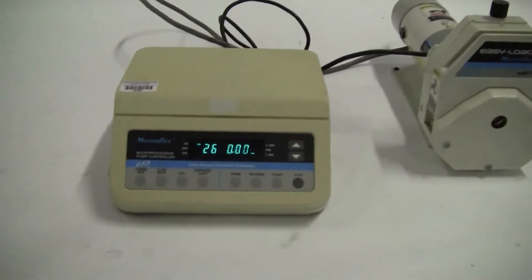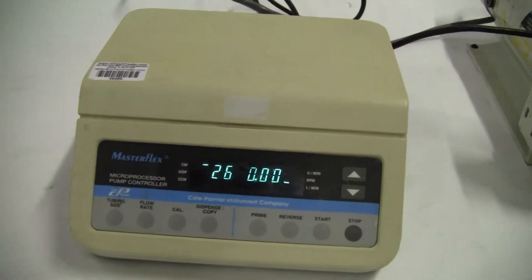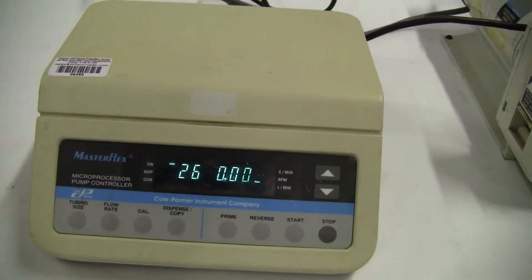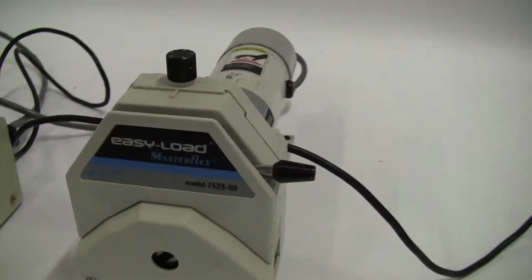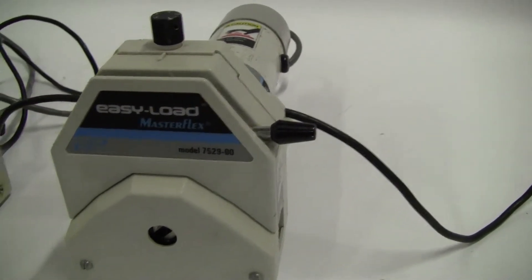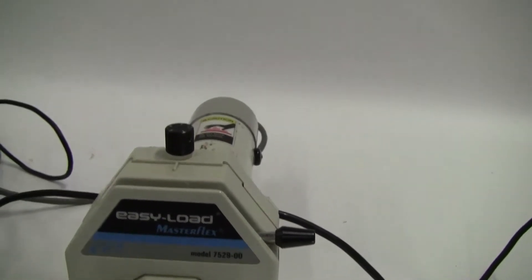Start with the pump controller. It's a microprocessor pump controller, model 7592-60. Then we go to the easy load pump head, model 7529-00, and the Kohl-Palmer pump drive, model 7592-50.